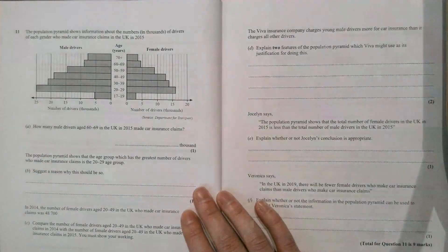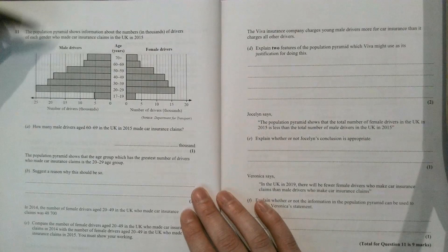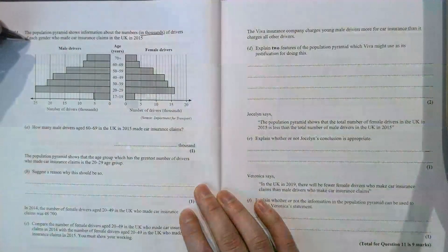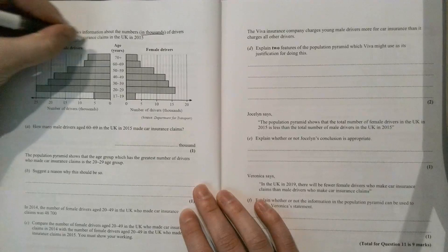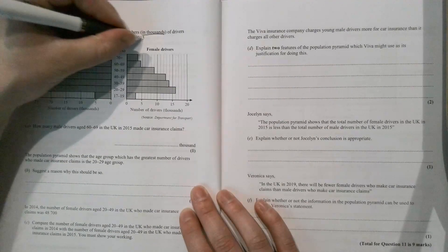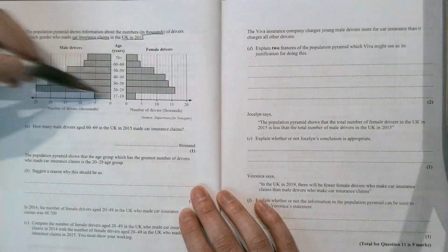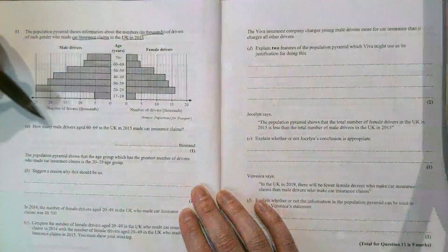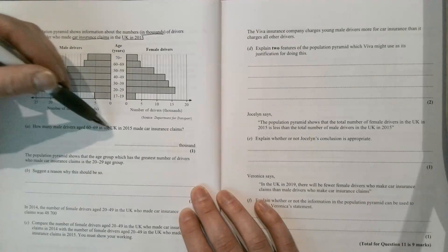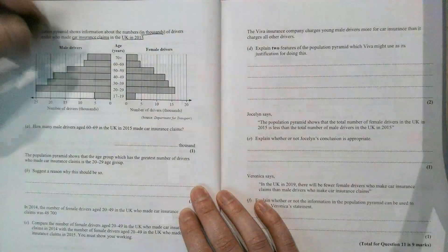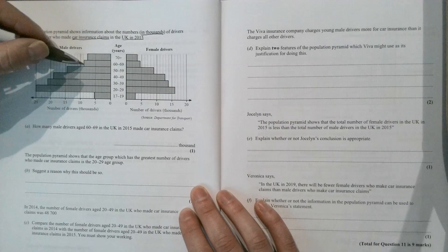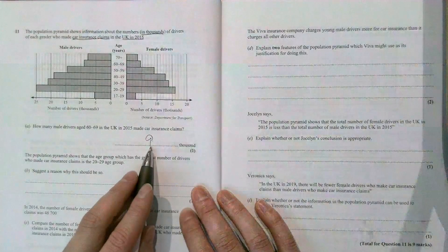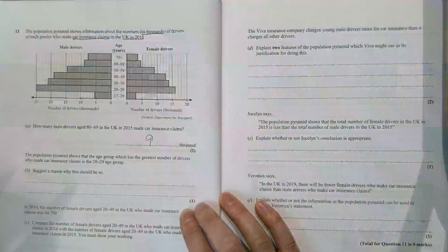Question 11. The population pyramid below shows information about the number of drivers in thousands, of each gender, who made car insurance claims in the UK in 2015. So it's only for one year, only in the UK, and only car insurance claims. How many male drivers aged 60 to 69 in the UK in that year made car insurance claims? So 60 to 69, we're just reading off the graph, and that is 9,000. Thousand is already there, so make sure you are just putting 9.